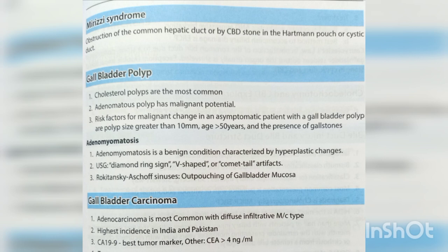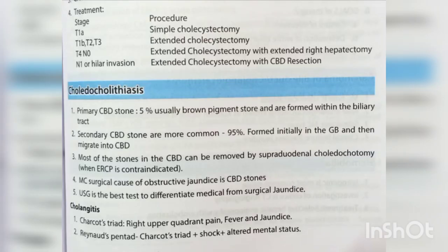Adenomyomatosis is a benign condition characterized by hyperplastic changes; USG shows diamond ring sign, V-shaped or comet tail artifacts; Rokitansky-Aschoff sinuses are outpouchings of gallbladder mucosa. Gallbladder carcinoma: adenocarcinoma is the most common type; diffuse infiltrative is the most common subtype. Highest incidence in India and Pakistan. CA 19-9 is the best tumor marker. Treatment by stage: T1a — simple cholecystectomy; T1b, T2, T3 — extended cholecystectomy; T4/N0 — extended cholecystectomy with extended right hepatectomy; N1 or hilar invasion — extended cholecystectomy with CBD resection.